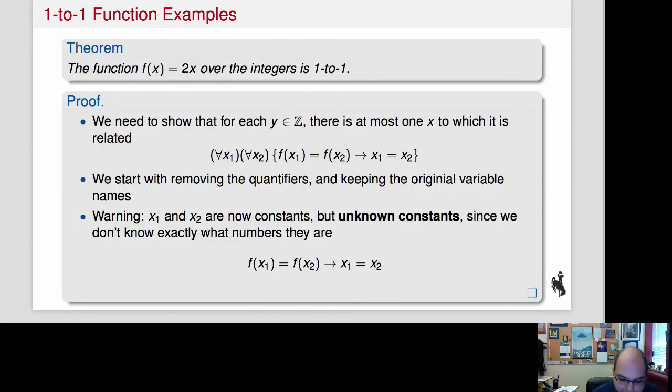Okay, so let's actually try to prove one of these things. So we have here the function f of x equals 2x over the integers, and that should be one-to-one. So here is what we need to prove. So if I have two different x values, right? If they have the same y value, so if f of x1 is equal to f of x2, then in fact the two of them have to be equal.